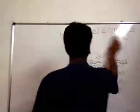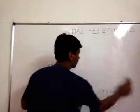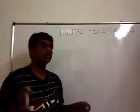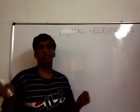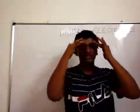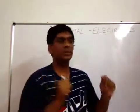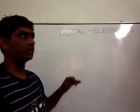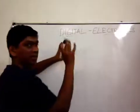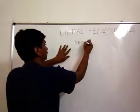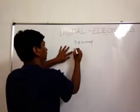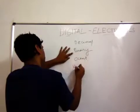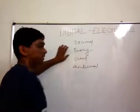Hello everyone. In this video I'm going to explain simple conversions from one form to another. The main types of numbers we use are decimal, binary, octal, and hexadecimal.